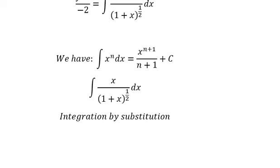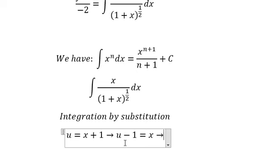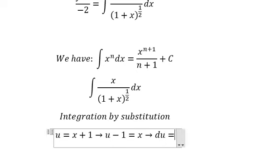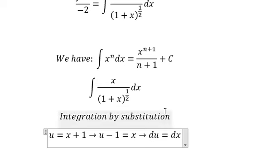So I will put u equals to x plus one, because we have x. So I will put one, go to the left. Later, we need to do first derivative for both sides and we have like this.